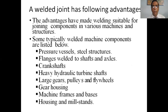These advantages have made welding suitable for joining components in various machines and structures. Some typically welded machine components are: special vessels, steel structures, flanges welded to shafts and axles, crankshafts, heavy hydraulic turbine shafts, large gears, pulleys and flywheels, gear housing, machine frames and bases, housing and mill stands. These machine components are welded and joined together to make a complete machine.